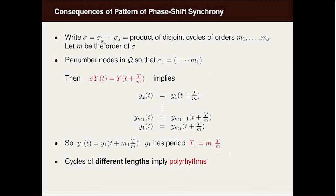If you write sigma as a disjoint product of disjoint cycles, say that the first one is order M1, and you relabel the nodes in the original network so that this is M1, then sigma Y of T will imply that Y2 is Y1 of T plus capital T over M, and so on. So you get one of these rotating waves on the first M1 cells.